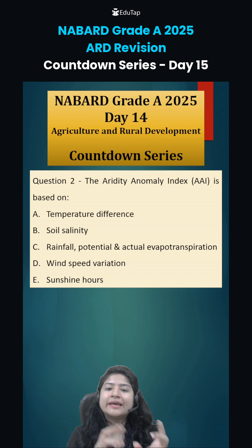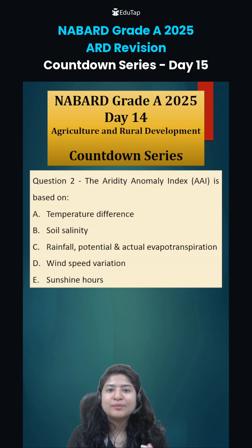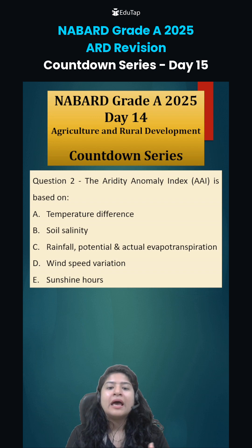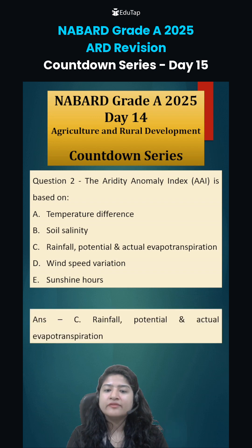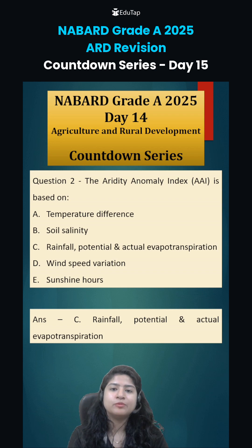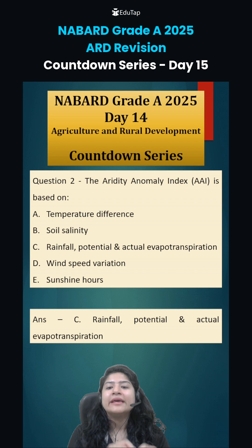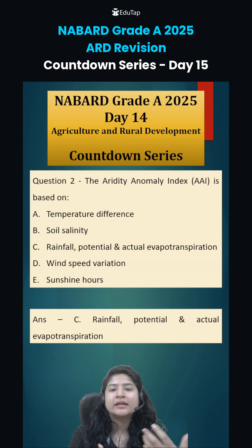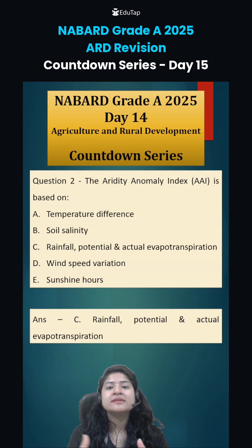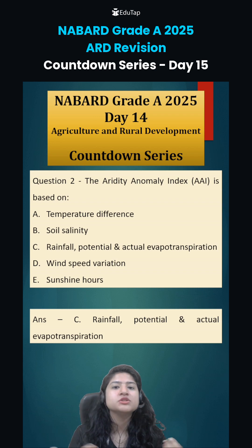Question two: the Aridity Anomaly Index is based on what? This index assesses drought conditions of a certain area. It is based on rainfall, potential evapotranspiration, and actual evapotranspiration. The difference between potential and actual evapotranspiration plus the rainfall condition of that area determines the AI. If it is negative, drier-than-normal conditions exist; if positive, conditions are better than normal.